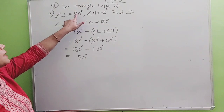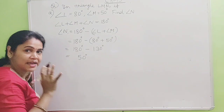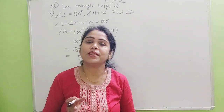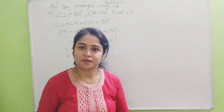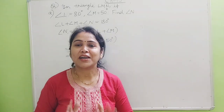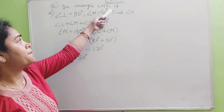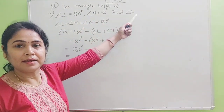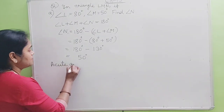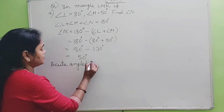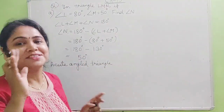All these three angles are less than 90 degrees. So in any triangle, if all the angles are less than 90, then that triangle is called an acute angled triangle. So what is the type of this triangle LMN? When we have got angle N, it is an acute angled triangle.